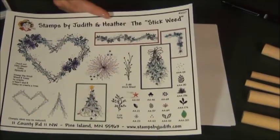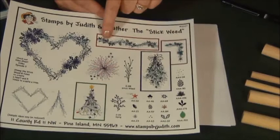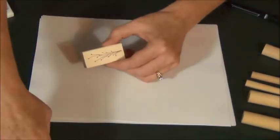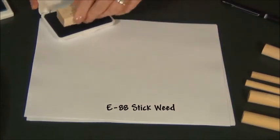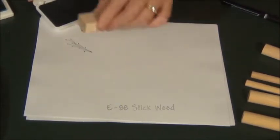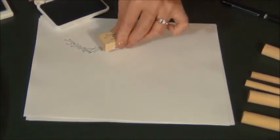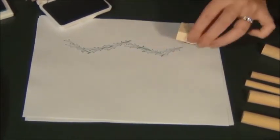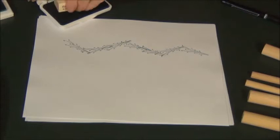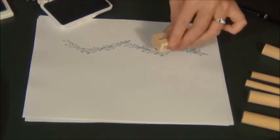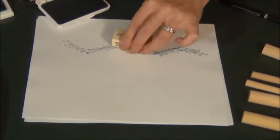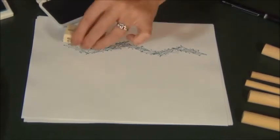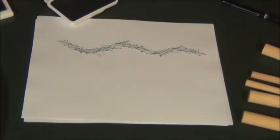The fourth idea on episode three is a garland. So I take my stickweed. And I just kind of loop it up and down. And then I'm going to turn my stamp around. And I kind of offset it a little bit when I do this. So there's my garland.